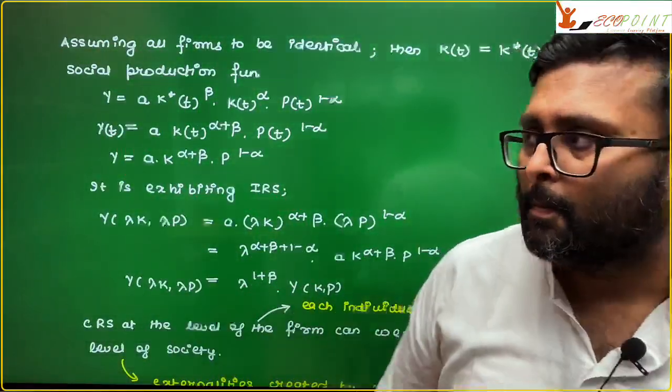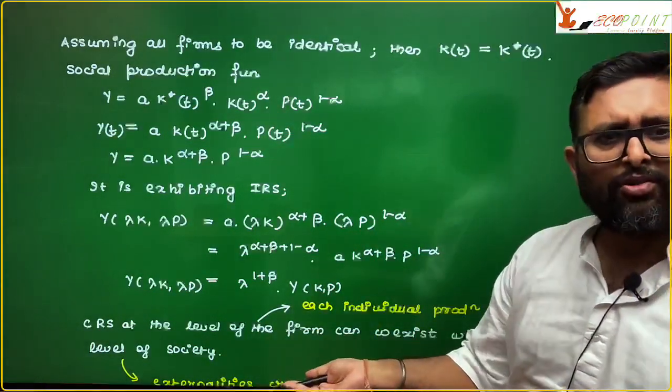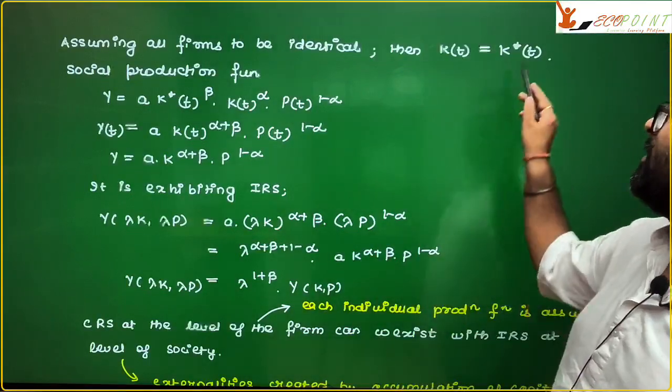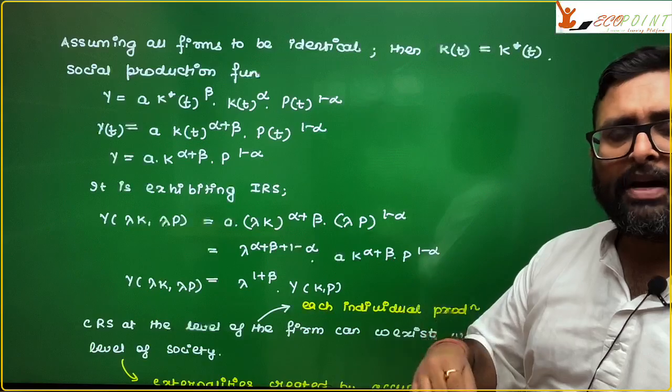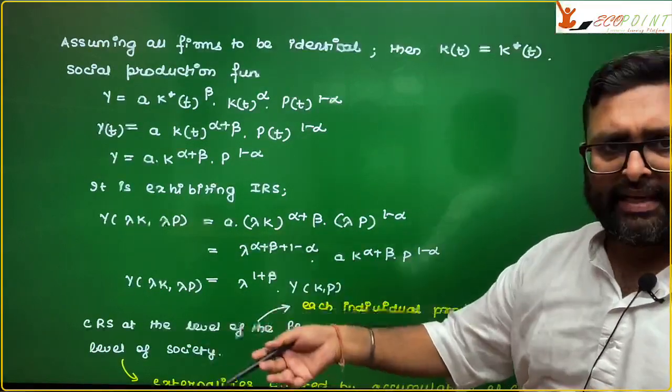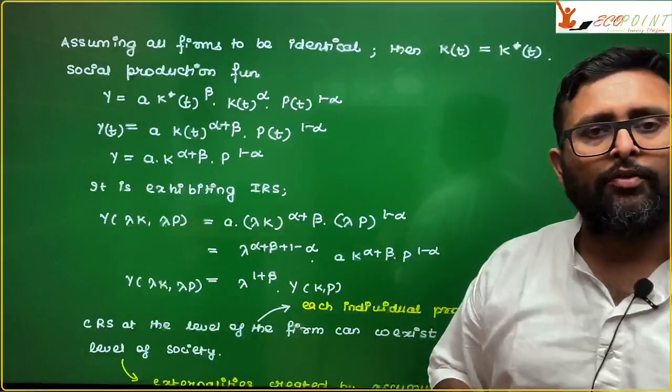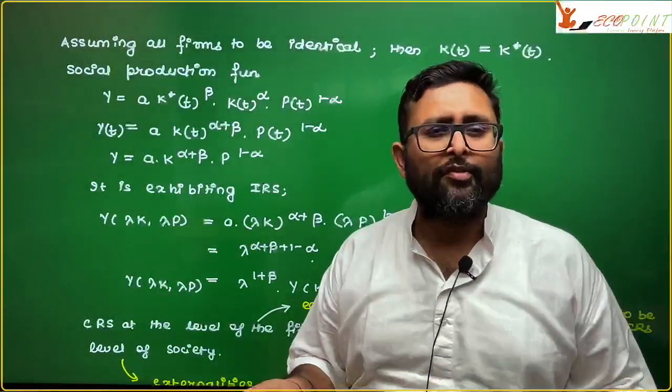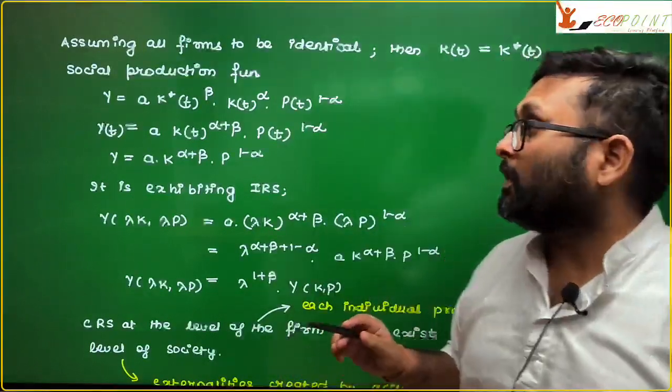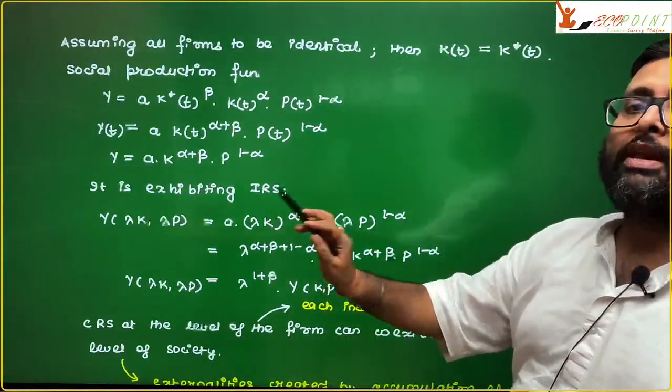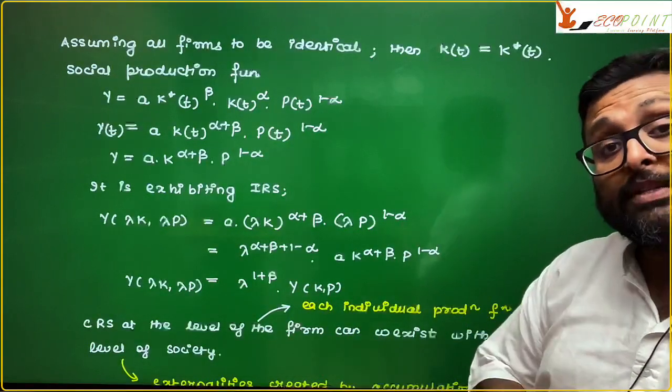So, in those situations, Debraj Ray has told, he has said, if you see, if all the firms are identical, then the average capital stock will be the same as the capital stock. You could say, otherwise, one has 5, another has 4, another has 8, 3 firms. So, on an average, it comes to around 3.5, 3.3 or something. But, assume all of them are identical. Then the average will be the same as the capital stock.